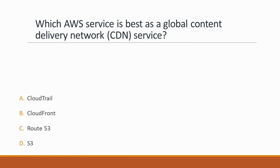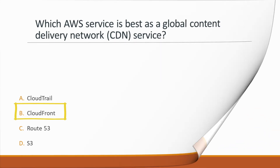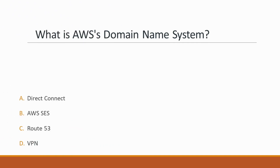Next question: Which AWS service is best as a global content delivery network (CDN) service? Options: A. CloudTrail, B. CloudFront. Correct answer is option B, CloudFront, because CloudFront is a web service that business and web application developers use as an easy and cost-effective way to distribute content with low latency and high data transfer speeds.